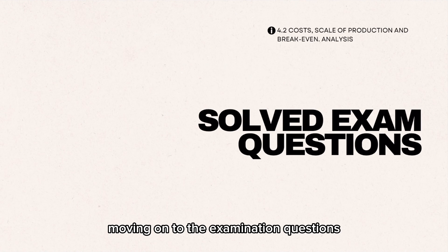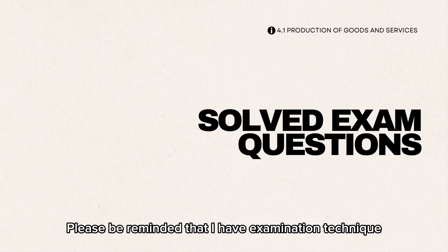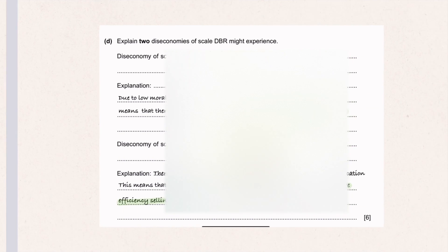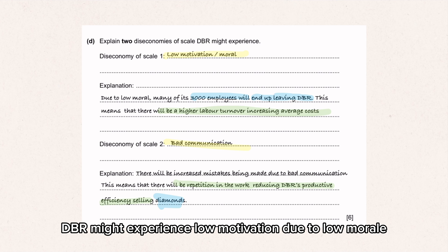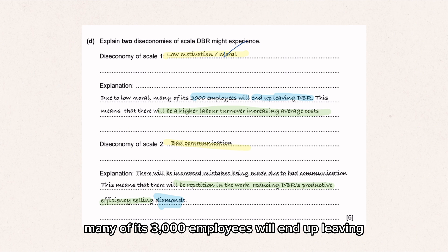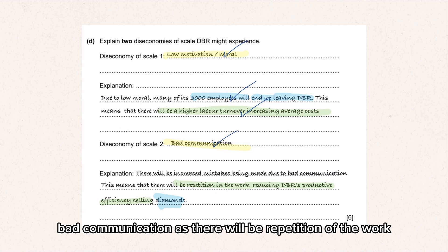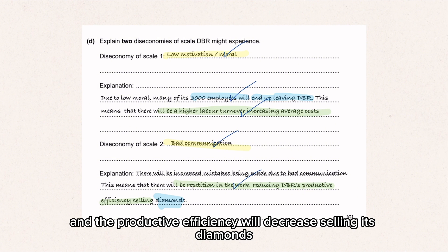Moving on to examination questions. Explain two diseconomies of scale DBR might experience. Low motivation: due to low morale, many of its 3,000 employees will end up leaving, resulting in a higher turnover. Bad communication: there will be repetition of work, and productive efficiency will decrease selling its diamonds.